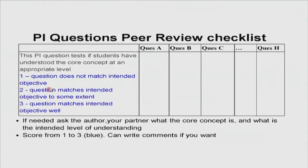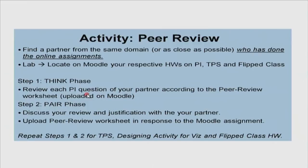In this manner you have a few questions for the peer instruction assignment. Since the person who wrote these questions — the author — is right next to you, you can always ask them for clarifications. There is also enough space in the worksheet for you to write comments. You review the PI question of your partner, and your partner does it for you, and then in the pair phase you discuss your review and the justification with each other — you actually discuss the review worksheet that you saw a moment ago.